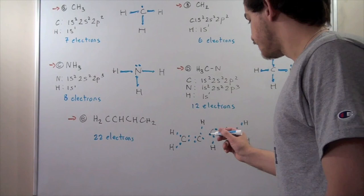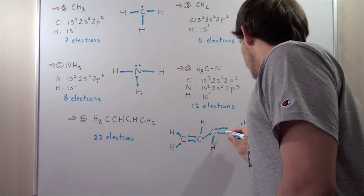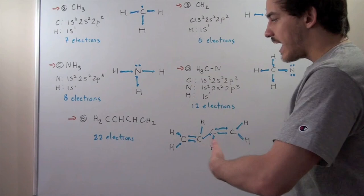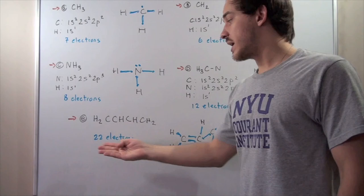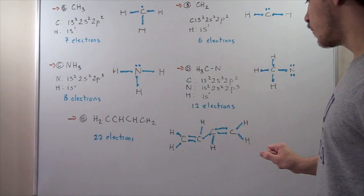Filling in the lines, we end up with 2 double bonds — one between the first two carbons and one between the other two carbons. Counting all electrons confirms we have 22 total, satisfying our condition for this neutral molecule. This is the Lewis dot structure for this compound.